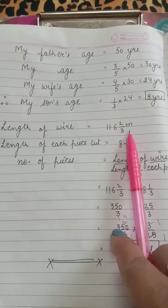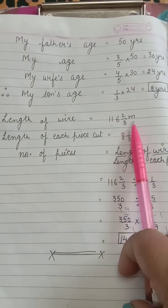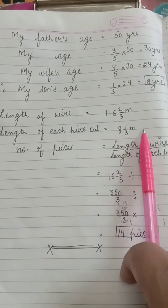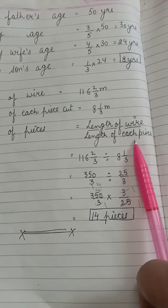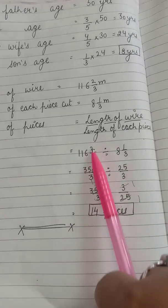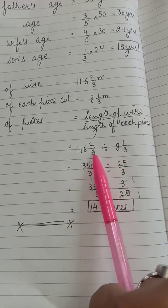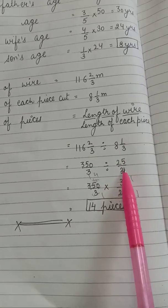Length of wire, 116 2 upon 3 meters. Length of one piece, 8 1 by 3 meters. Number of pieces means that's the total length of the wire divided by length of each piece. 116 2 upon 3 divided by 8 1 upon 3. Change mixed to improper, change mixed to improper.